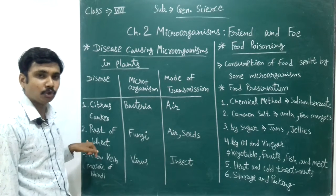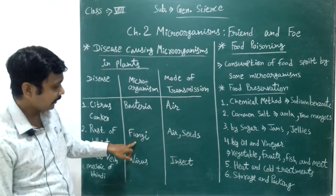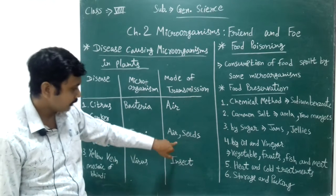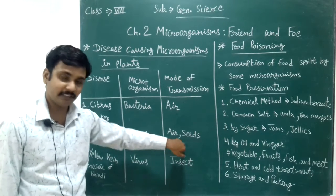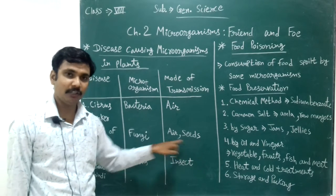Number two is rust of wheat. This disease is caused by fungi. Its mode of transmission is air and seed — it is both an airborne and seed-borne disease.